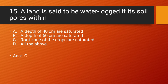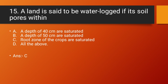Question number 15: A land is said to be waterlogged if its soil pores within — Option A: a depth of 40 cm are saturated. Option B: a depth of 50 cm are saturated. Option C: the root zone of the crop are saturated. Option D: All of the above. Answer: Option C — root zone of the crop are saturated.